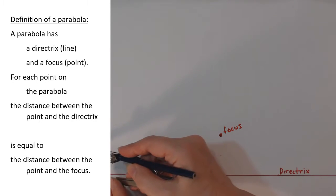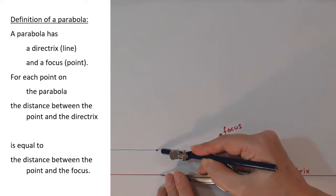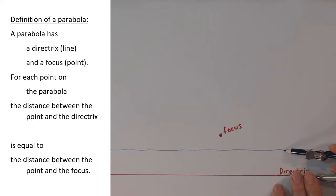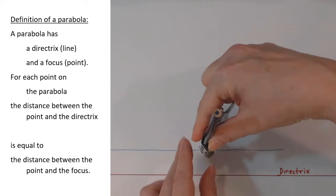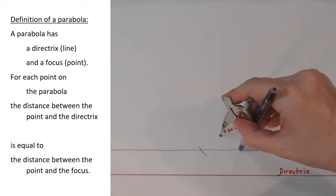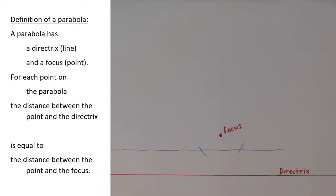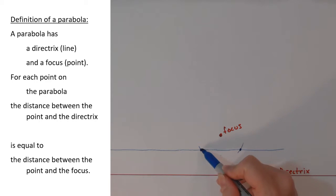I have a compass set for about an inch and a quarter, and I'm going to use this to draw a straight line parallel to the directrix about an inch and a quarter away from the directrix. Then I'm going to use the compass, still set for the same distance, put the point of the compass on the focus, and draw an arc of points that are about an inch and a quarter away from the focus — the same distance that we used for the directrix. Where the arc crosses the line, you find a point that is the same distance from the focus as it is from the directrix. I have two of these points, each one the same distance away from the focus as it is away from the directrix.